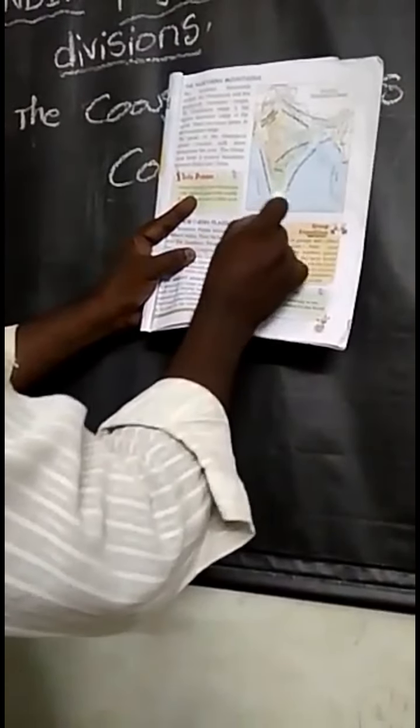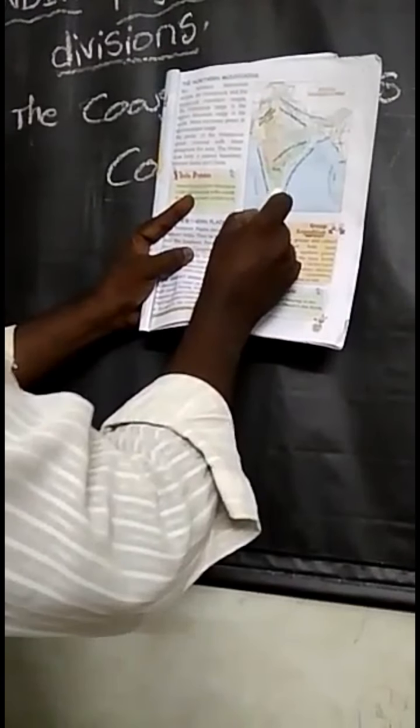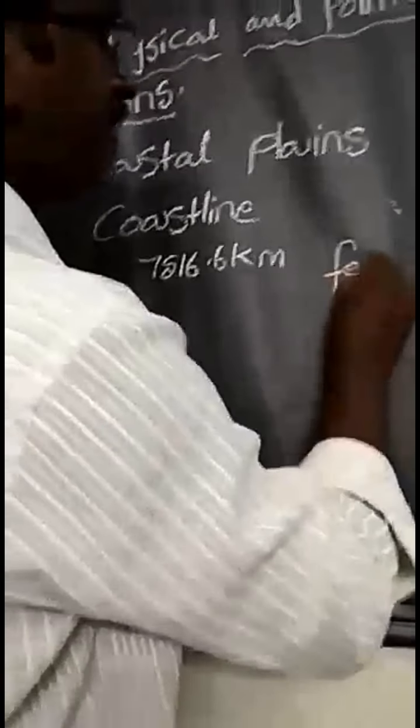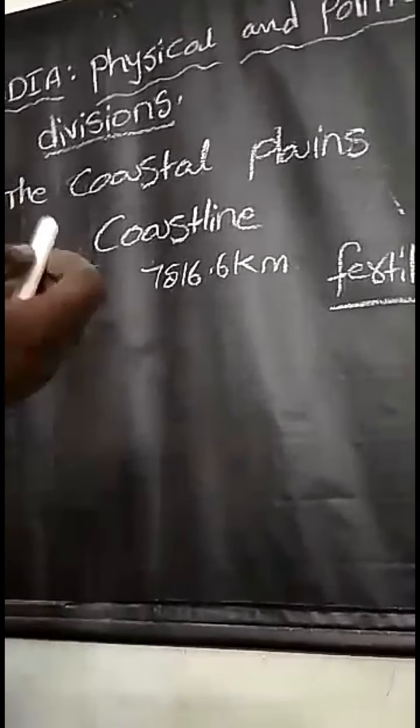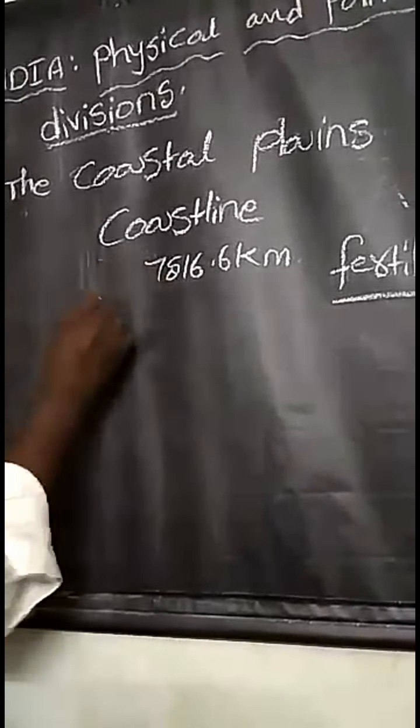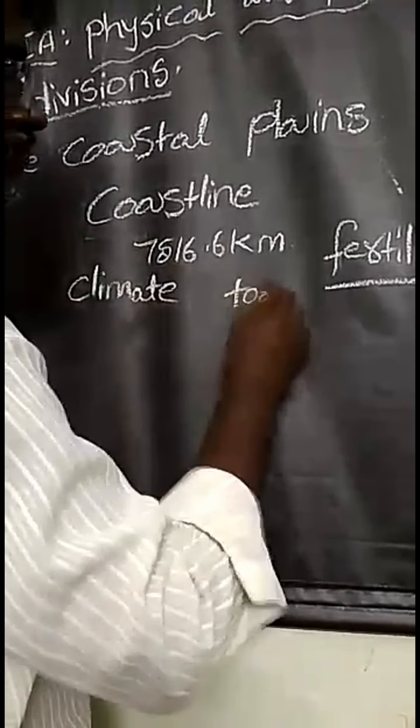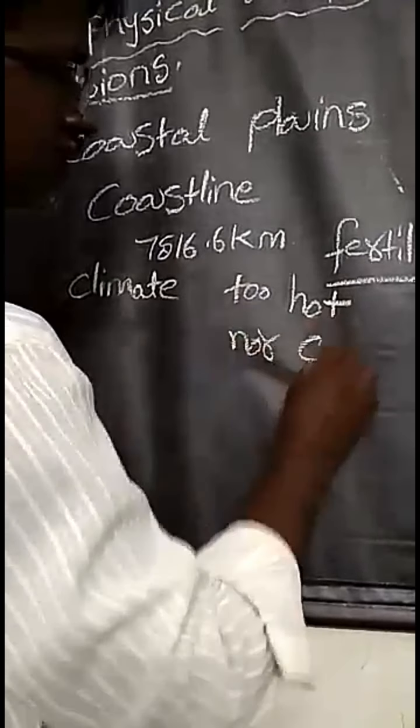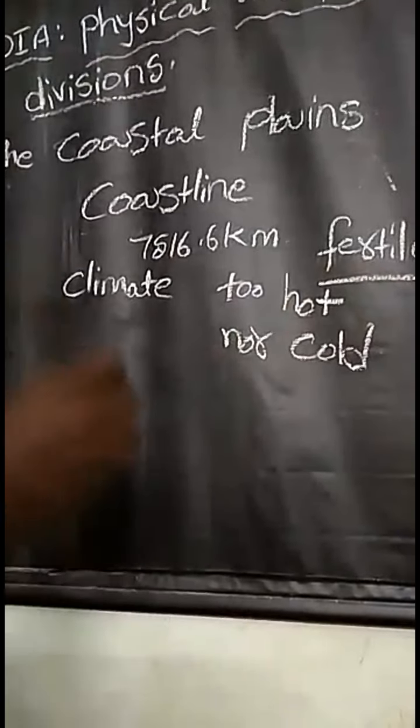The western coastal plain and the eastern coastal plain are separated by the Deccan plateau. These two plains meet each other at Kanyakumari, which is here on the map. This land is very fertile. Fertile means the land which is useful for agriculture, so many crops are grown here. The climate here is neither too hot nor too cold.